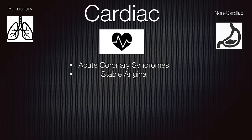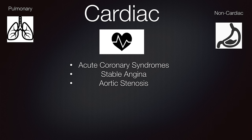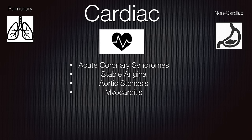Stable angina is different than a patient having a myocardial infarction because typically angina will be relieved by nitroglycerin. Aortic stenosis is a valvular disease characterized by systolic murmur. Oftentimes patients have a bicuspid valve that calcifies over years and it's found in old age. Myocarditis typically presents as a mild to vague pain, often preceded by a viral illness, and you'll sometimes see conduction abnormalities on the EKG.